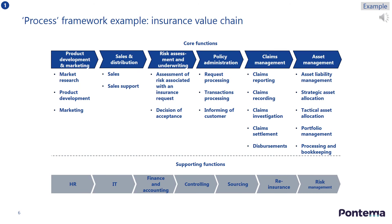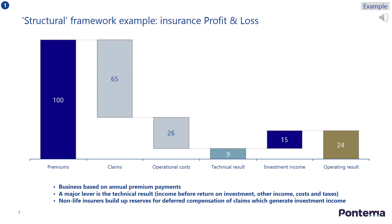Here is an example of a process-orientated framework: a value chain for the insurance industry. This way of organising information helps ensure you are considering all the process steps. And here is an example of a structural framework: a profit and loss waterfall for the insurance industry. This way of organising information helps ensure you are considering all the different structural elements.